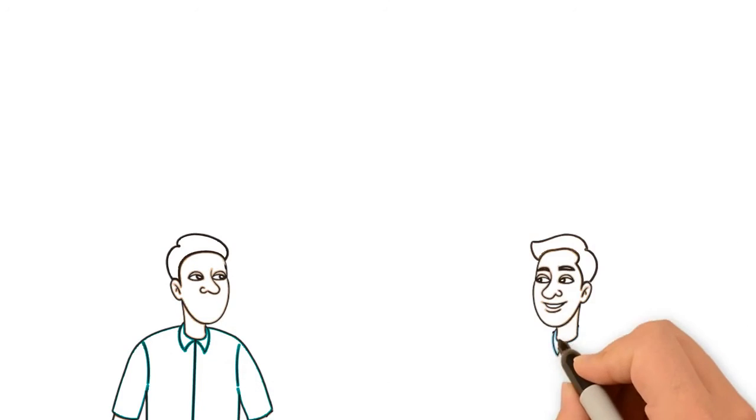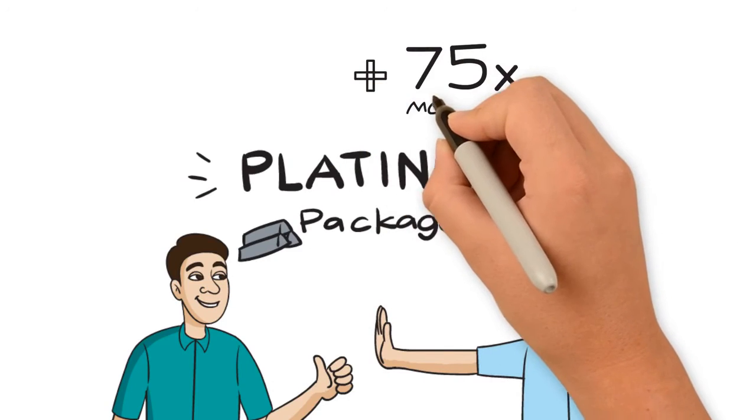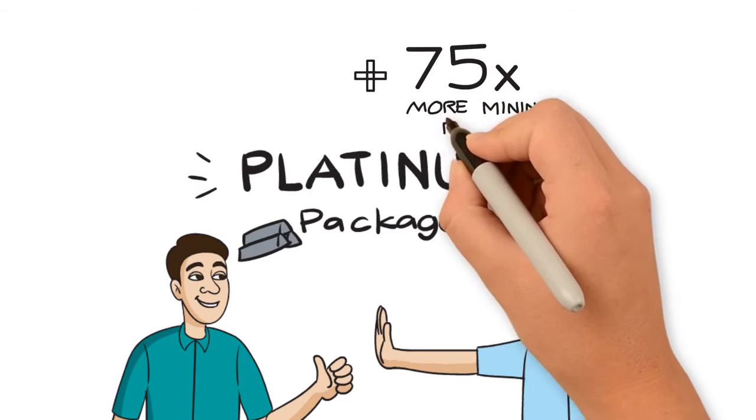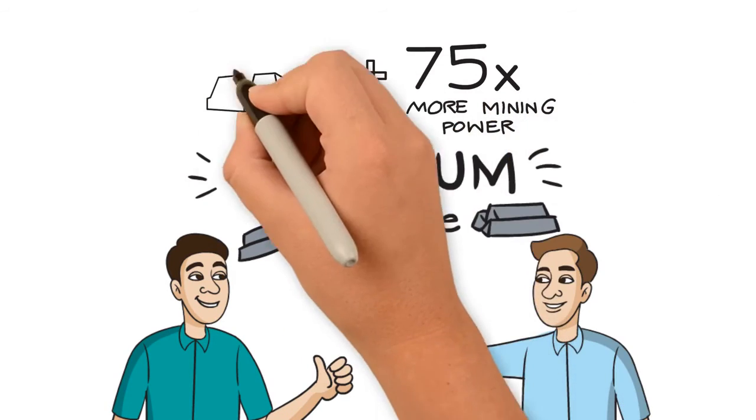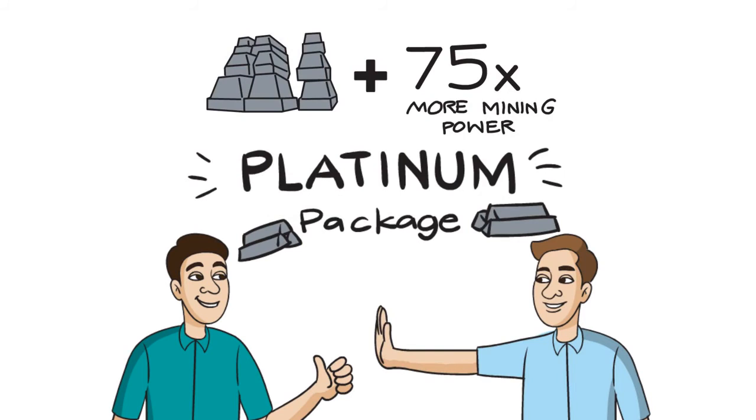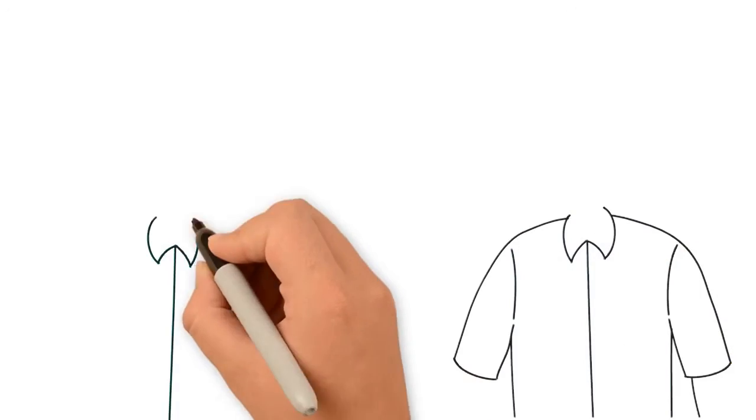That is when Oscar told Tim that if he bought the platinum package, he would increase his return even further, as he would have more gold, silver, and 70 times more digital mining power than the original pack, which would greatly compound his daily payout return.